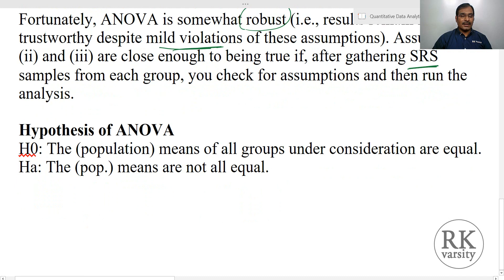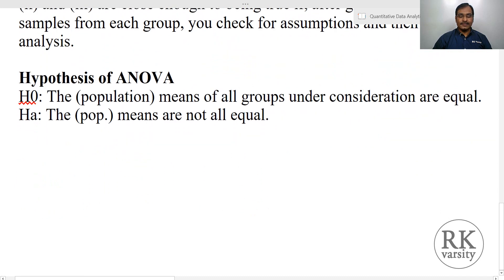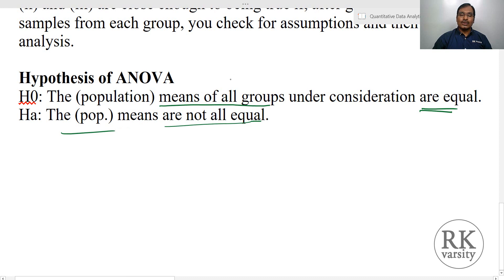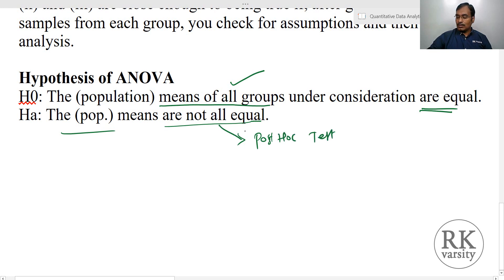In analysis of variance, the null hypothesis is that the population means of all groups under consideration are equal, and the alternative hypothesis is that the population means are not equal. If the population means are equal, you can stop the analysis. But if the population means are not equal, then you need to run a post-hoc test. I will now explain this with an example.